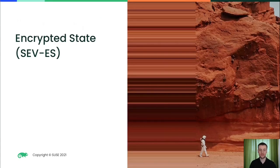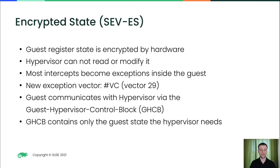The extension of SEV is SEV-ES — Encrypted State. With encrypted state, not only the guest memory is encrypted but also the guest register state. That is important because the register state can also contain confidential data — for example AES keys in the FPU state or other confidential data in other registers — so that needs to be protected from the hypervisor as well. However, this creates problems for the hypervisor, because to handle intercepts it needs access to the register state. For example, instructions like CPUID or read/write MSR take their parameters in registers.